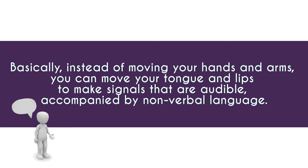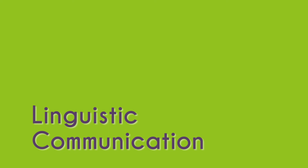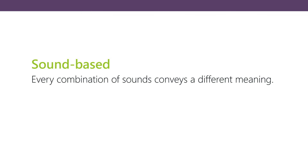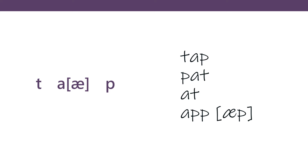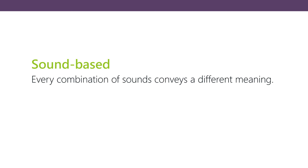It's very important to look at the fundamental structure of linguistic communication: it is primarily speech-based. Speech is a bunch of different sounds that we make and combine in different ways to create different signals. For example, you can say 'tap' or 'pat' and they mean different things — the same sounds in a different order. These sequences become units by themselves, referring to different ideas.